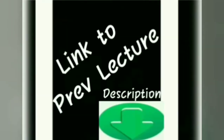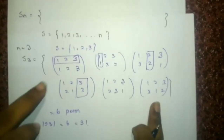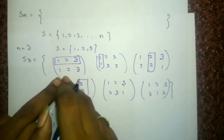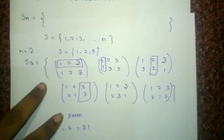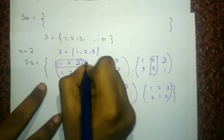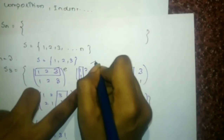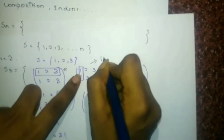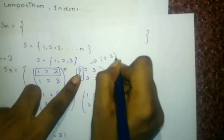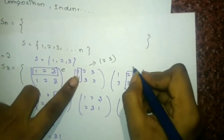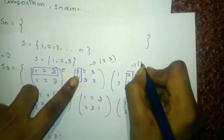Hello friends, welcome to the 6th part of our lecture on permutation. Like the short form for this — this is an ID mapping. I will represent this as E, and the short form for this is (2, 3), and for this the short form is (1, 3).